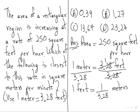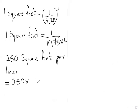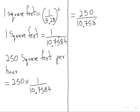They have given 250 square feet per hour. We can write this as 250 multiplied by 1 over 10.7584, which equals 250 divided by 10.7584.